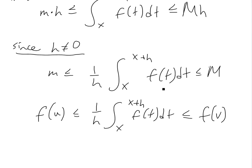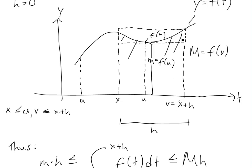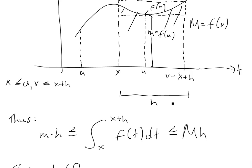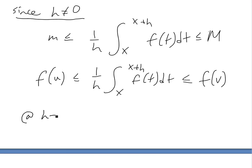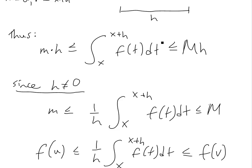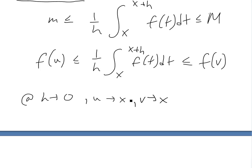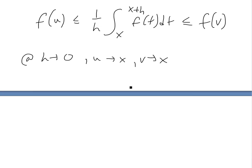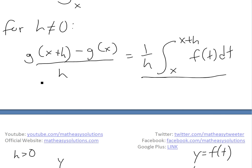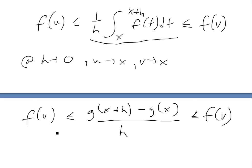Now what we can do is take h and make it approach zero. As h goes to zero, u goes to x because u has to be between x and x+h. So as the interval gets smaller and smaller, u is going to be somewhere in between and approach x. Similarly, v also approaches x, since v is between x and x+h. So the maximum and minimum are both approaching x. Substituting, we have f(u) ≤ [g(x+h) − g(x)]/h ≤ f(v).